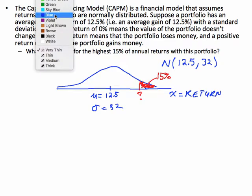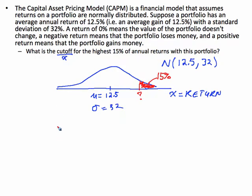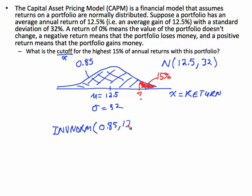Well, that means I'm going to have to use inverse norm, because this time they gave me an area and they want a position. I need to use the inverse norm. So if I'm going to use inverse norm, I have to give the area from the left-hand side. So giving the area from the left-hand side means that what I need to enter into the calculator is 0.85. So that means it's inverse norm, 0.85, with a mean of 12.5 and a standard deviation of 32.